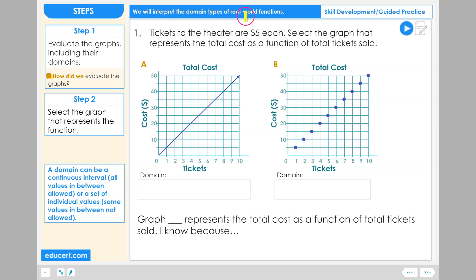Let's interpret the domain types of real-world functions. Problem number one. Tickets to the theater are $5 each. Select the graph that represents the total cost as a function of total tickets sold.